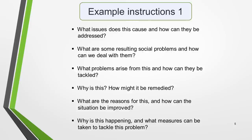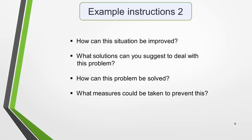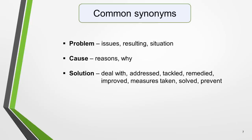Pause the video and read through them. See if you can identify the synonyms that have been used instead of the words problem, cause or solution. And here are a few questions where you only have to write about the solution. It's essential that you're able to recognize the common synonyms, words and phrases used in problem-solution questions. The synonyms used for problem are issues, resulting and situations. Cause has sometimes been replaced by reasons and why. While for solutions, eight different synonyms have been used: deal with, addressed, tackled, remedied, improved, measures taken, solved and prevent.